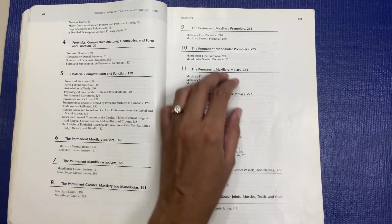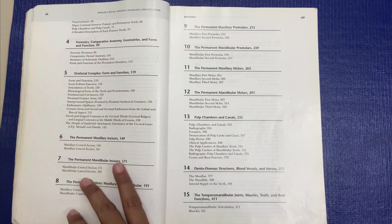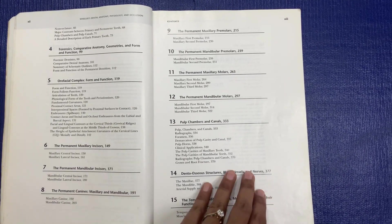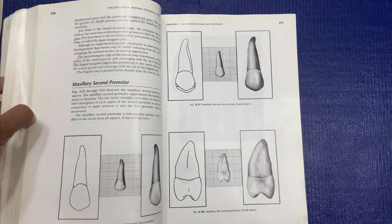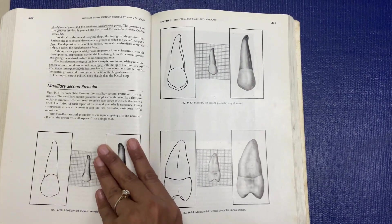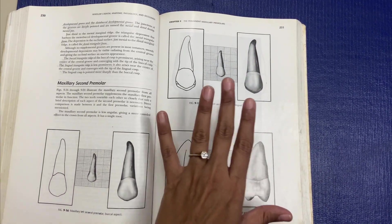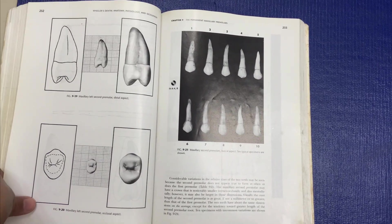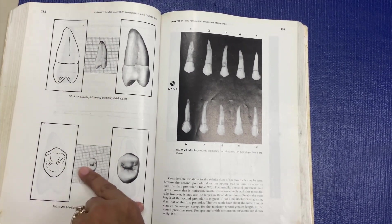First permanent maxillary incisors, then permanent mandibular incisors, then canines maxillary and mandibular, then premolars and molars. All these individual teeth are given in separate chapters. If you can see, for example, this maxillary second premolar.